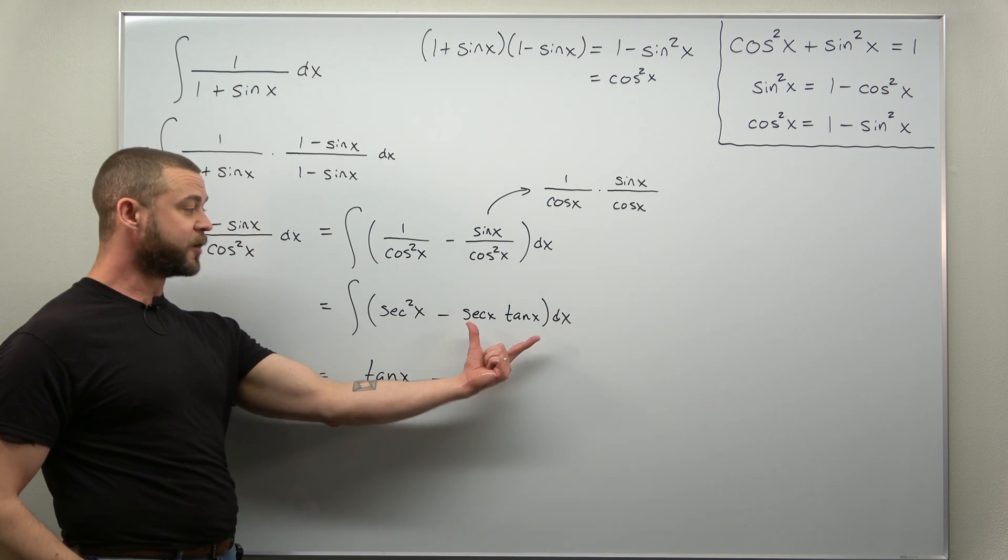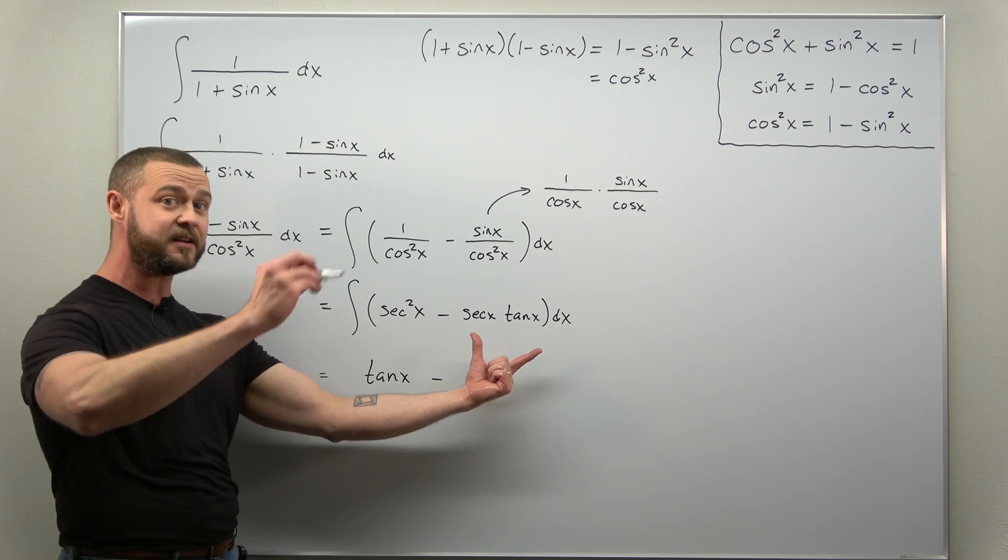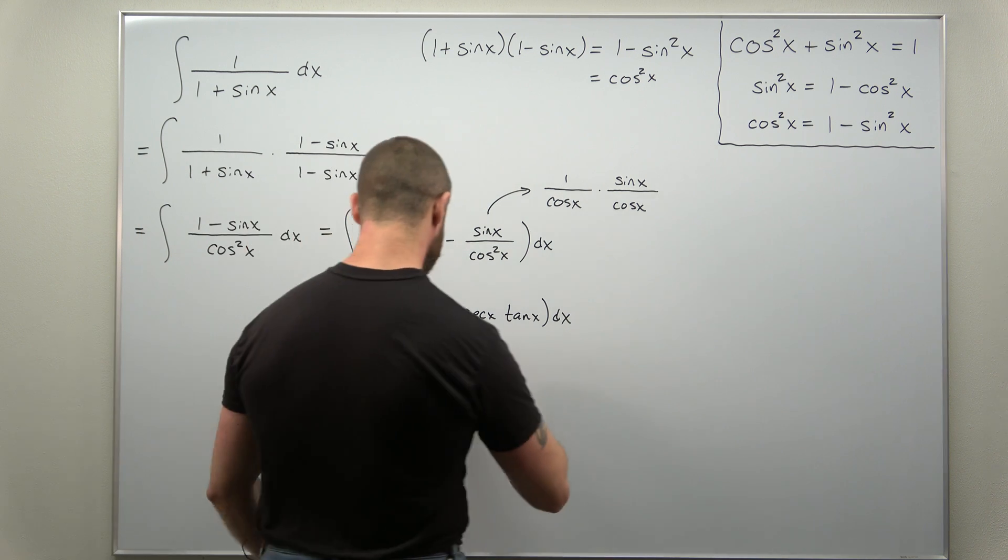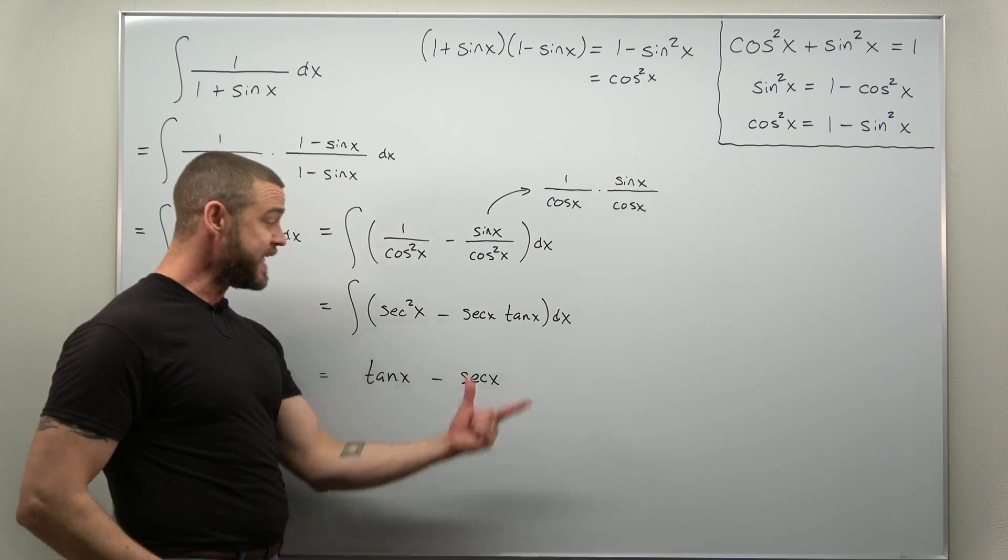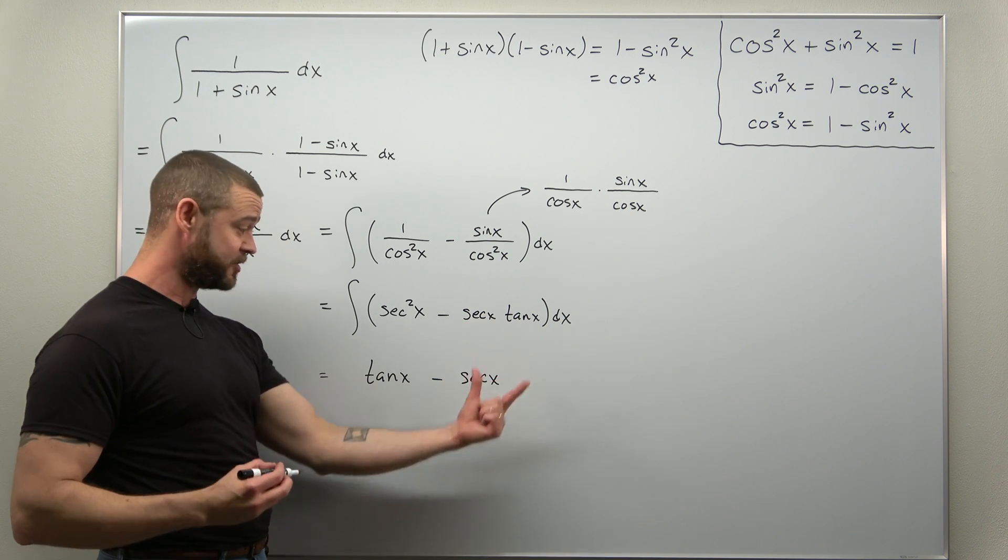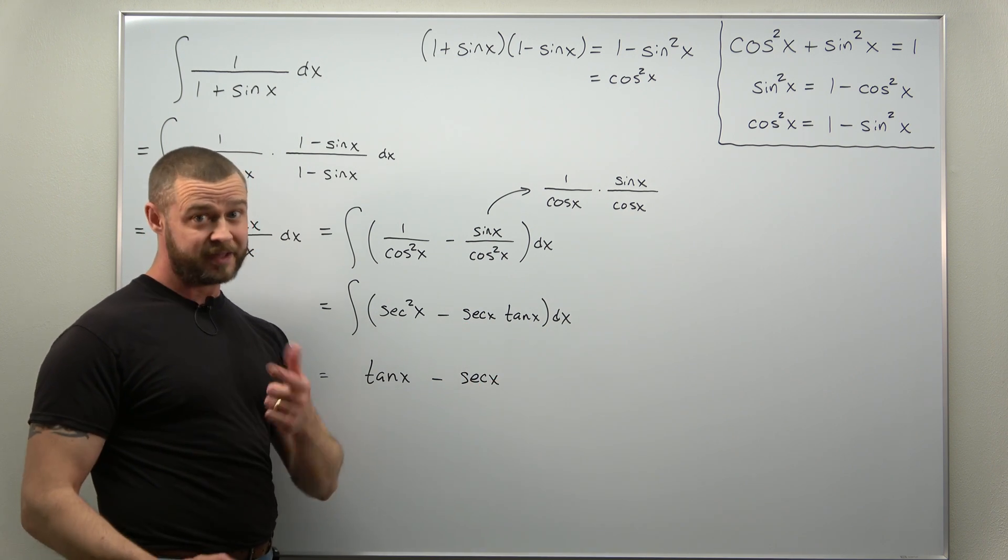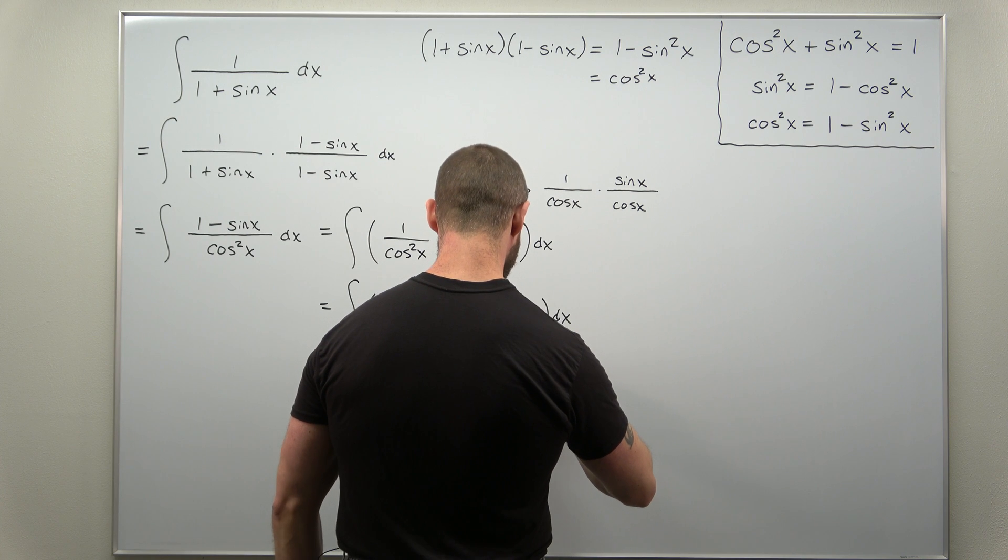And also what trig function differentiates to secant times tangent? That's going to be secant. So here the antiderivative of secant times tangent, that's secant. And at this point we're done. Don't forget your plus C.